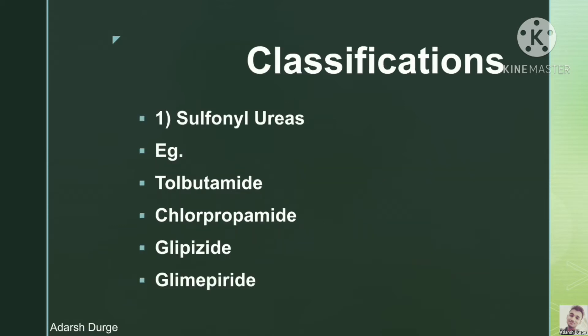The classification of anti-diabetic agents: the first one is sulfonyl ureas. Examples are tolbutamide, chlorpropamide, glipizide, glimepiride, etc.